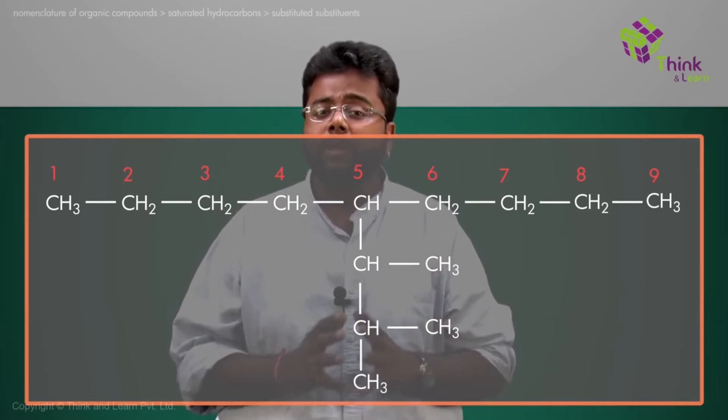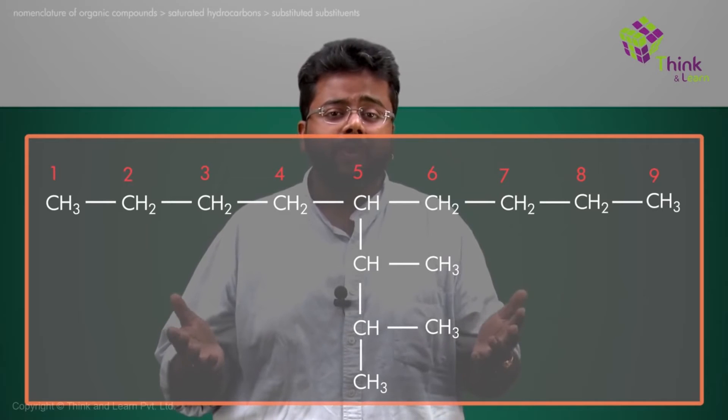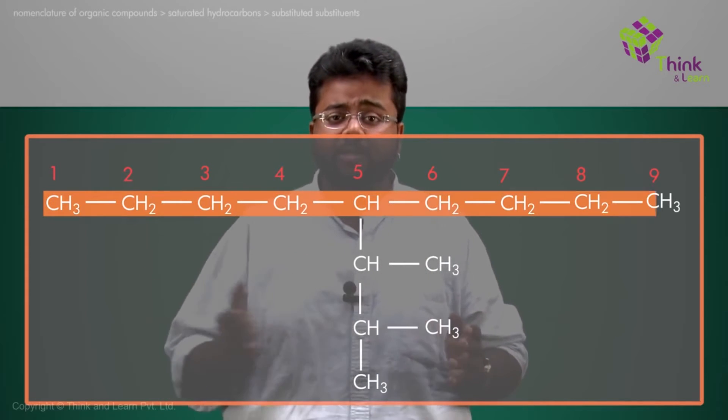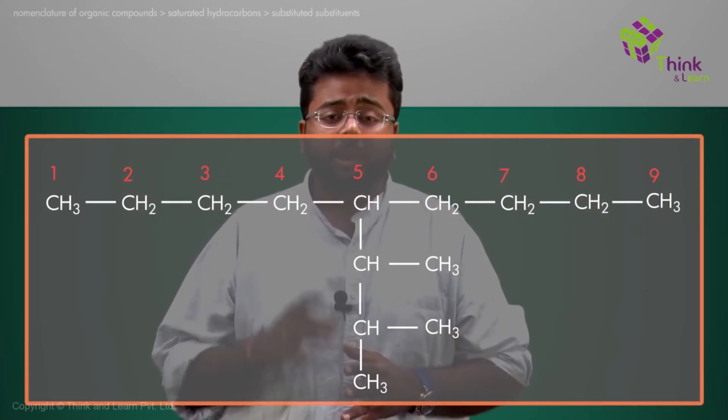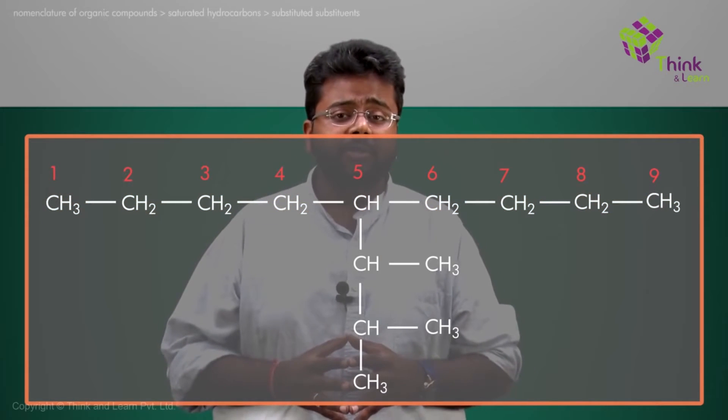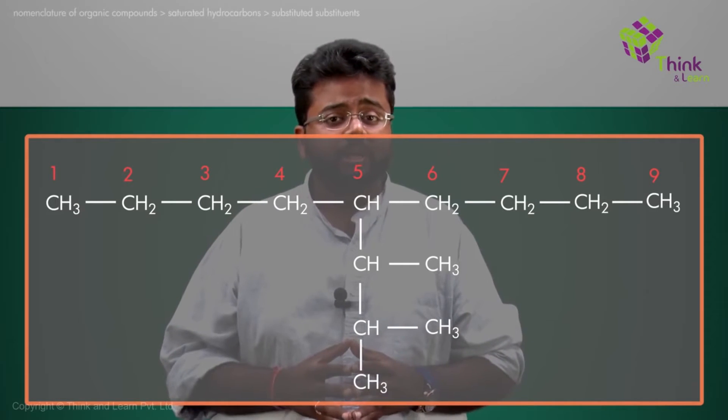Now how do we name this? For naming, the first thing is you have to mark the parent chain. Now for the parent chain you can easily judge that the nine carbon long chain would be the parent chain. If I start from the right side or the left side, the substitution is on the fifth position itself.